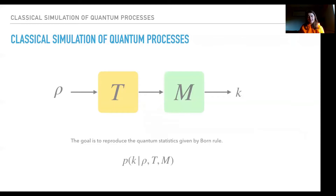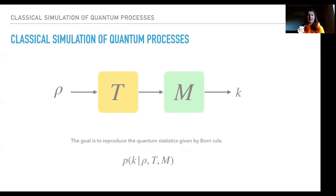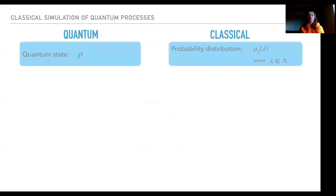Classical simulation of a quantum process: a quantum process usually starts with a quantum input state, then you can do some transformations and some measurements, and we have an outcome. The goal of the classical simulation is to reproduce quantum statistics given by the Born rule. We want a probability of obtaining outcome k, given that we start with input state rho, apply some transformation t, and do some measurement m.